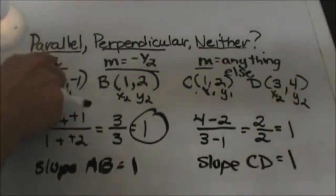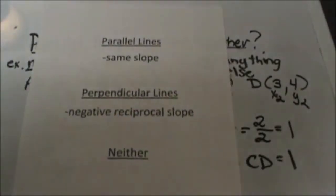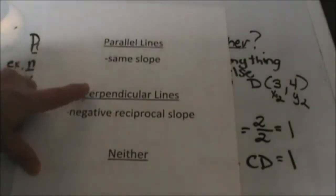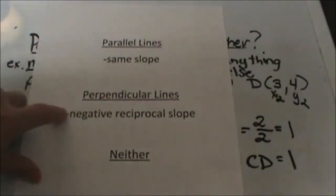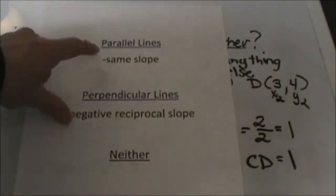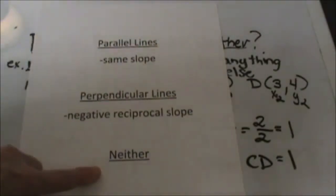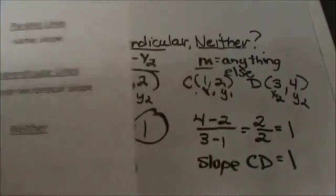So since they have the same slope, we can say that the two lines are parallel. And here's a quick little overview. If they have the same slope, they're parallel. If they have negative reciprocal slopes, they're perpendicular. And if it's neither one of these, then we say the lines just intersect and they're neither parallel nor perpendicular.